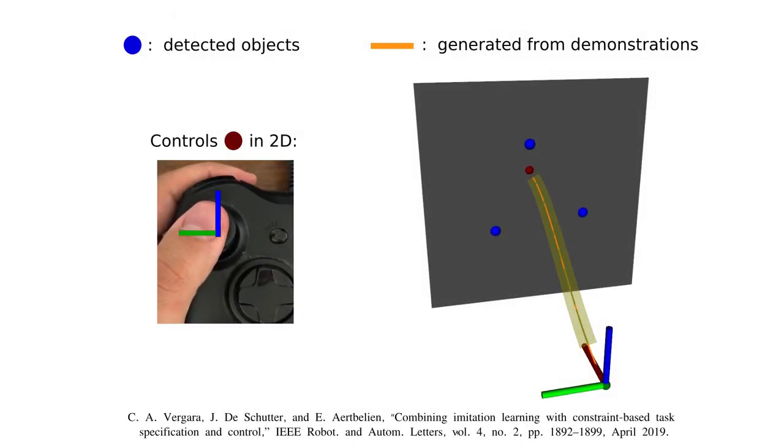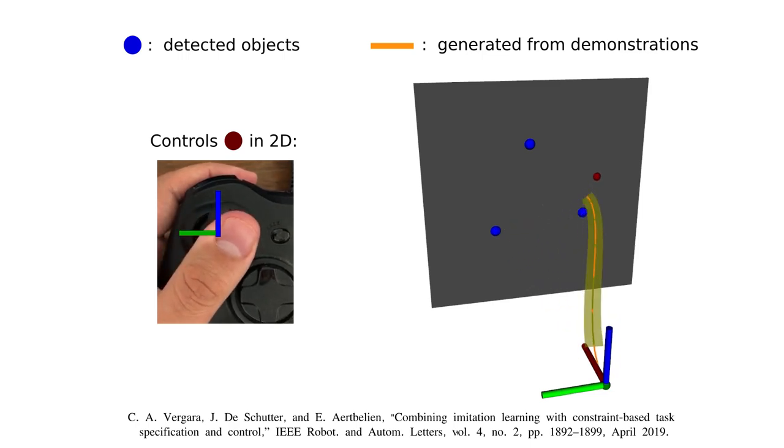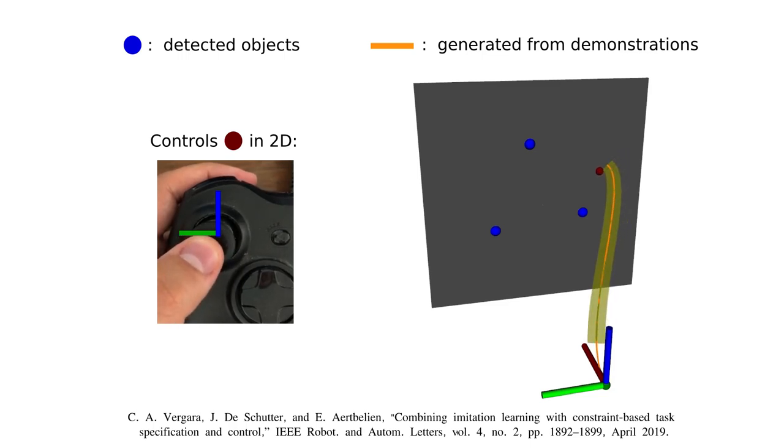In this work, for demonstration purposes, the operator controls the target position with a joystick. The shape of the tube adapts to follow the changing target while preserving the geometric shape learned from a set of demonstrations, which are performed by kinesthetic teaching. The learning algorithm is based on probabilistic principal component analysis and is described in the reference below.